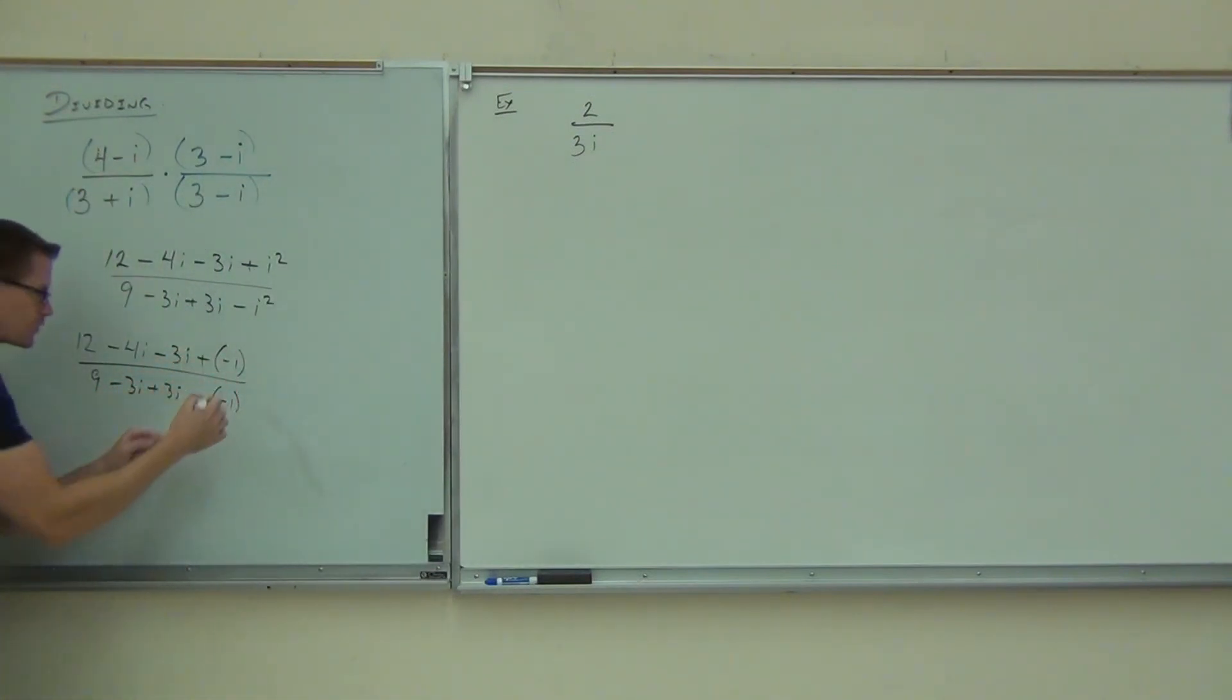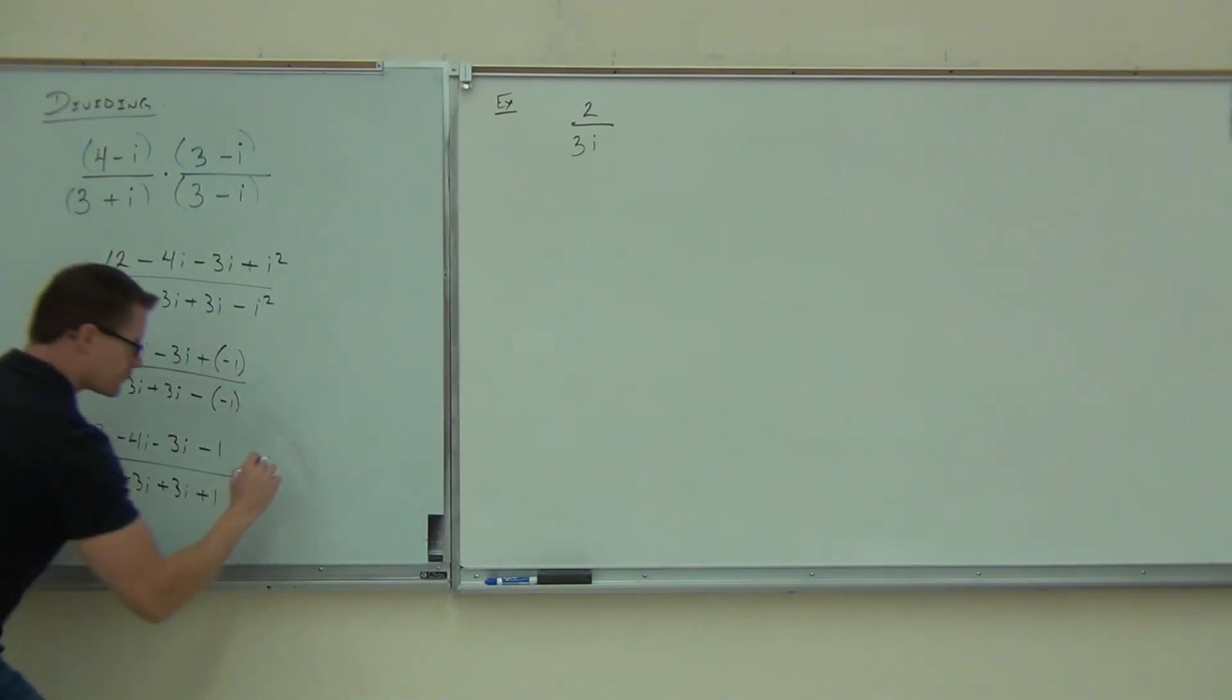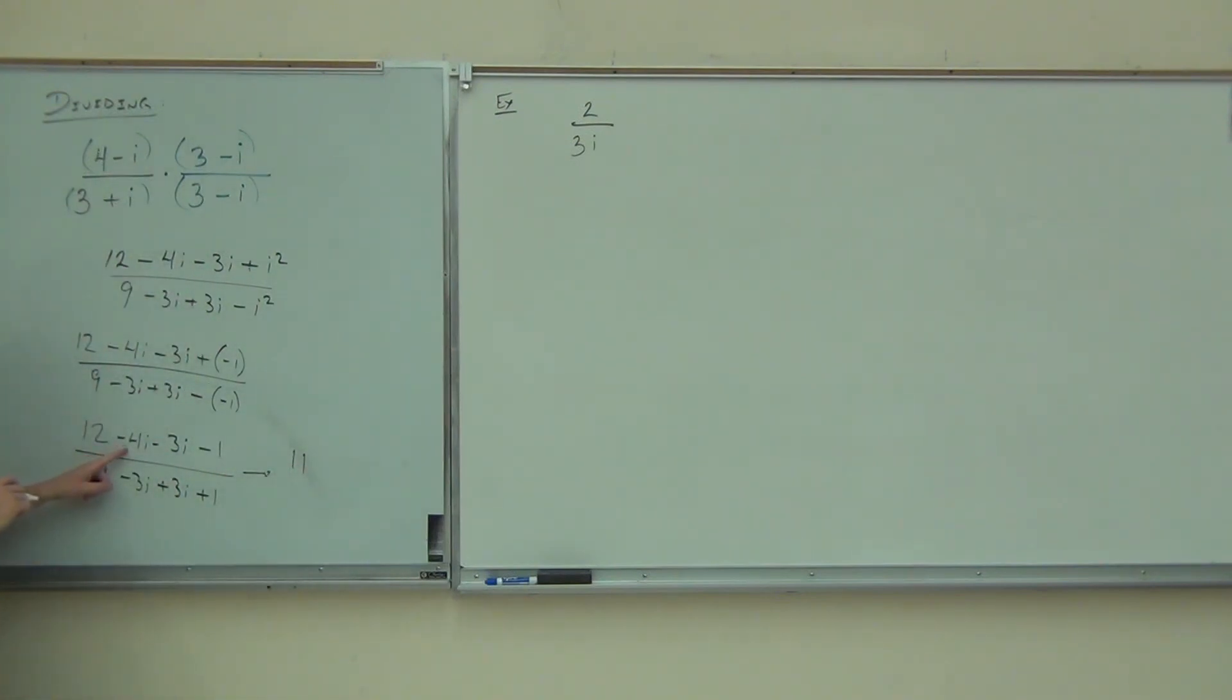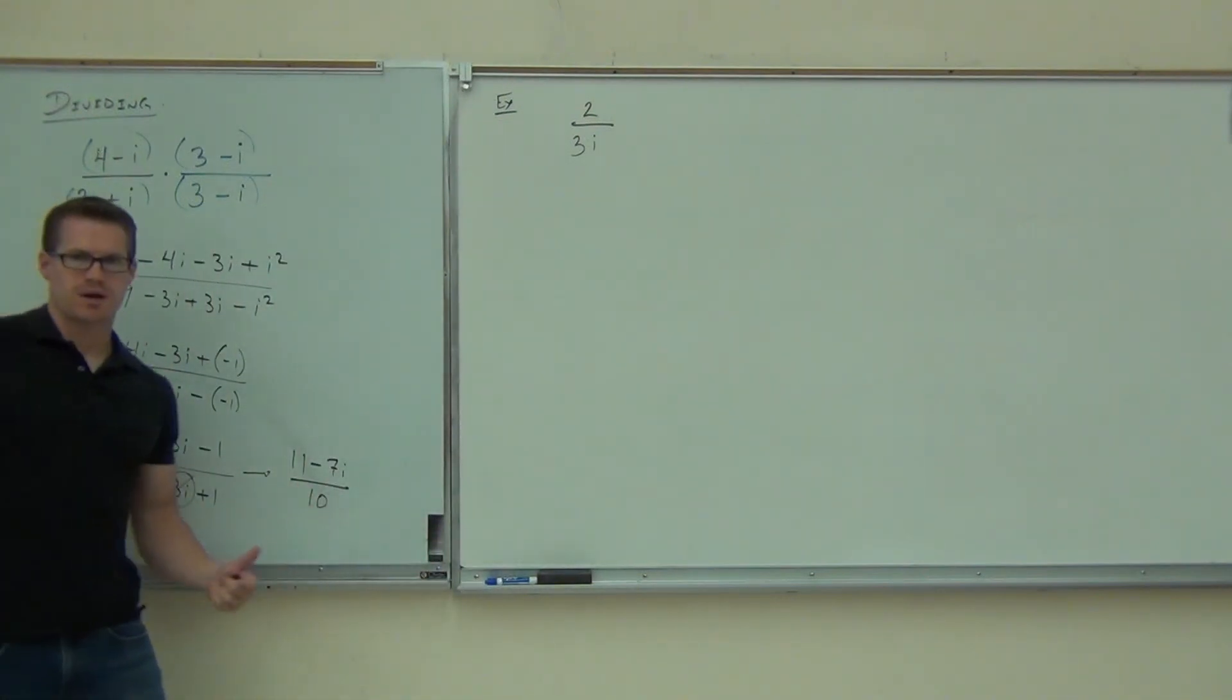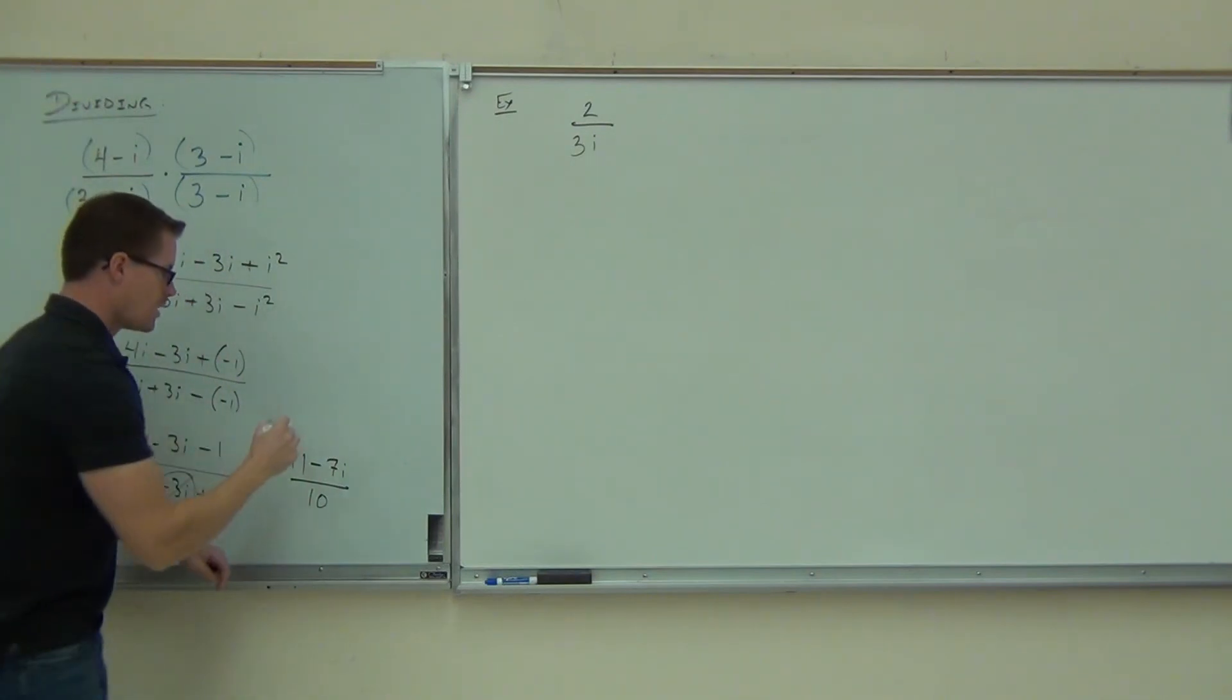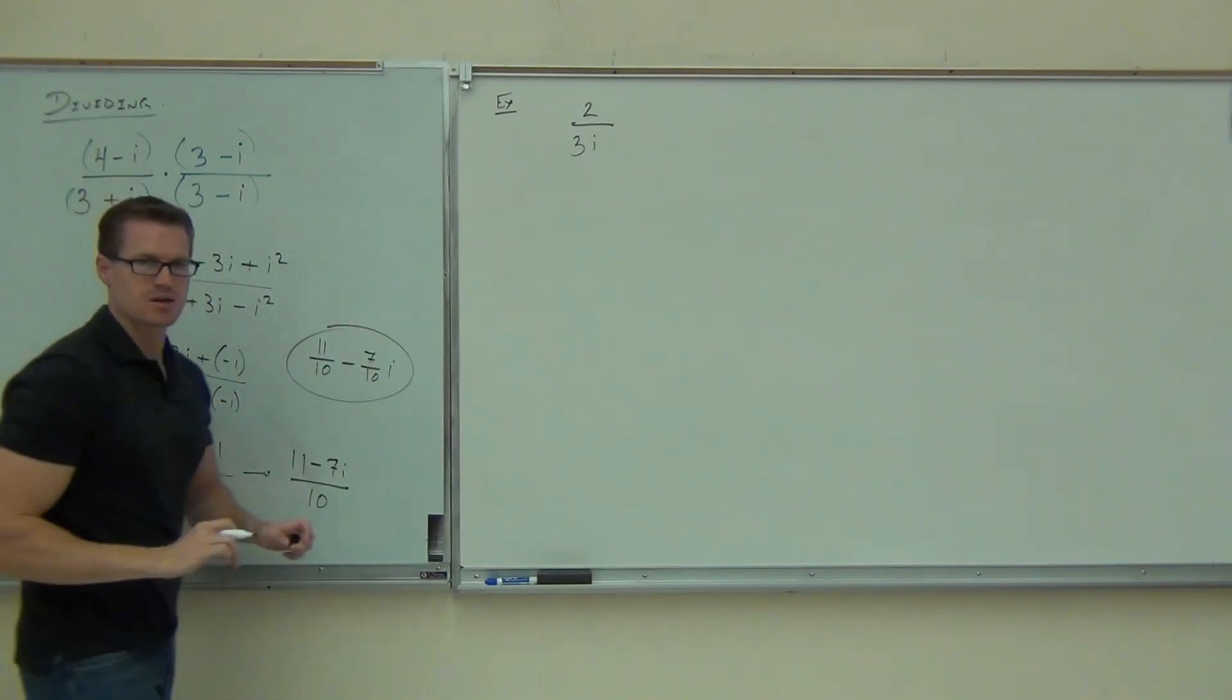I'm going to change the signs here. That's what this is doing for us, really. We have 12 minus four i minus three i minus one, and nine minus three i plus three i plus one. Do you see where the minus one and the plus one are coming from? We have plus and negative. That's minus. Minus and negative. That's plus. Then we'll combine what we can. We should get a complex number out of this. 12 minus one, we've got 11. Negative four i, negative three i minus seven i. Nine plus one gives us ten. Minus three i plus three i, that's what we wanted to have happen. Those i's are gone. We get this number. How many people got that far? Did you take it one step further? Yes. Good.